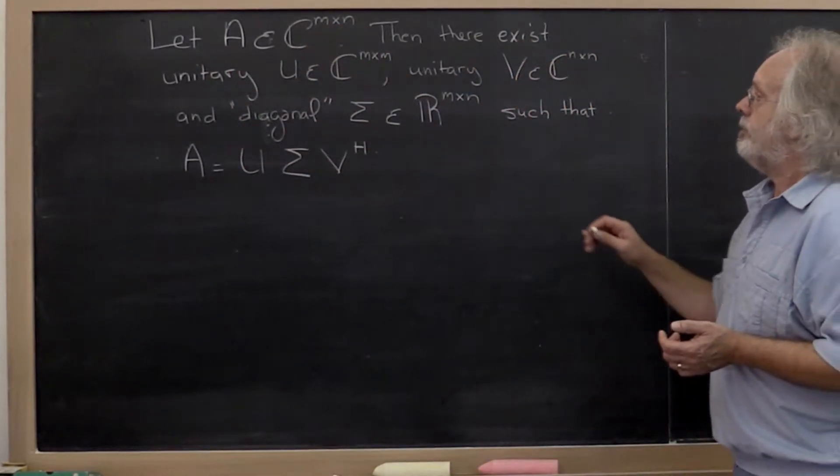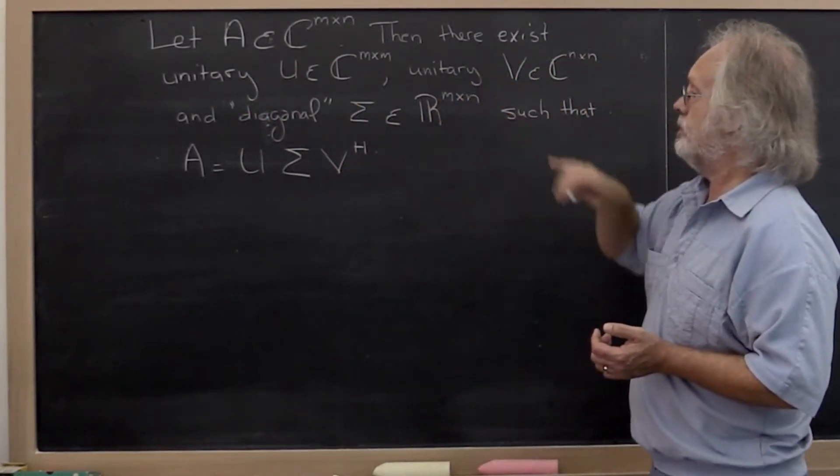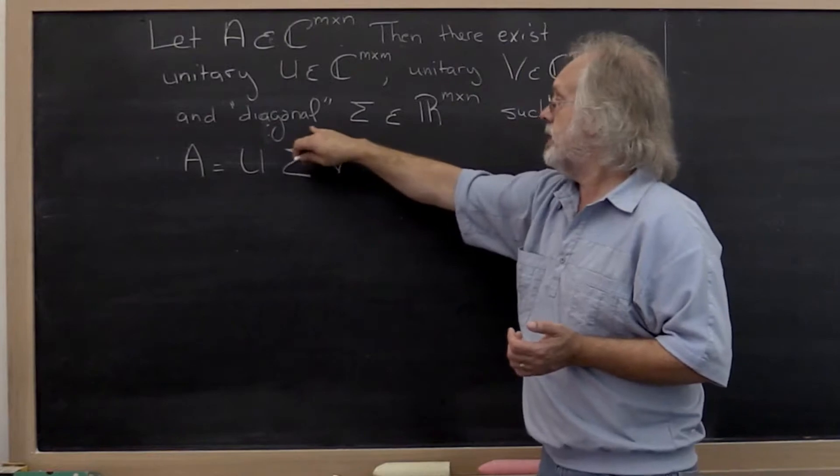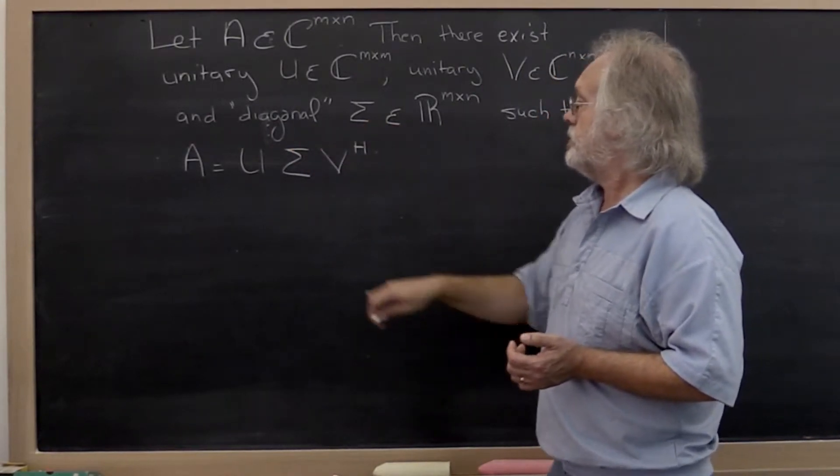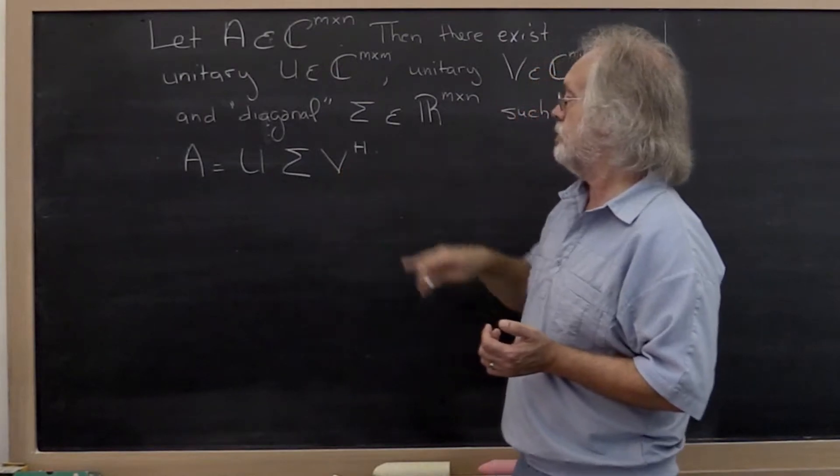you can find the unitary matrix U, a unitary matrix V, and a diagonal matrix sigma such that A is equal to U times sigma times V Hermitian transpose.